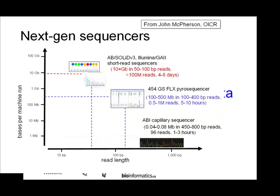This is a plot showing read length versus bases per machine. AB SOLiD and Solexa/Illumina are right now at around 10 gigabases with 50 to 100 base pairs per read, generating 100 million reads over four to eight days. 454 produces longer reads but much less data, and Sanger produces even longer reads but much less data again.